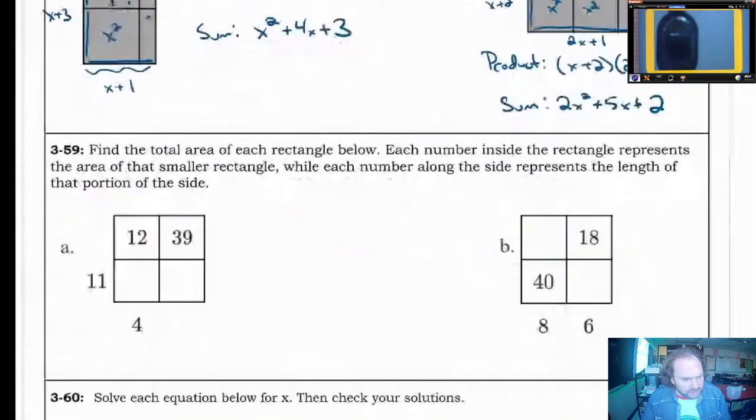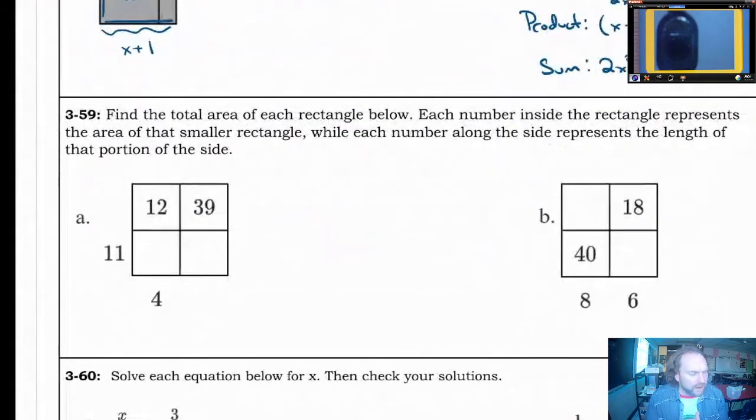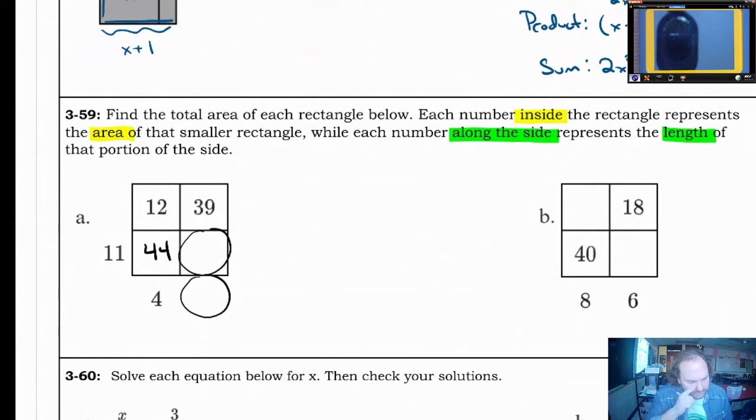359 is setting the stage for where we're going to go next week on Monday when we get back from the weekend. 359, we're going to find the total area of each rectangle below. Each number inside represents the area. Let's key on that. Each number inside represents the area of that smaller rectangle, while each number along the side represents the length of that portion of the side. So we'll be multiplying 11 times 4 to get 44 in this box.